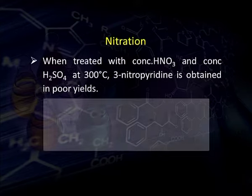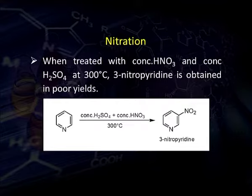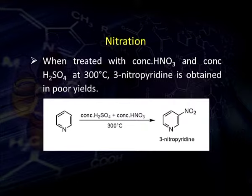Pyridine gives electrophilic substitution reactions like nitration, sulfonation, and halogenation. For nitration: when pyridine is treated with concentrated nitric acid and concentrated sulphuric acid at high temperature — about 300°C — the nitronium ion attacks the third position and we get 3-nitropyridine, but the yield is not very good.